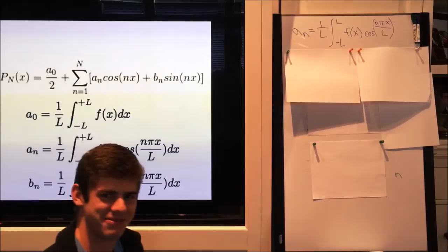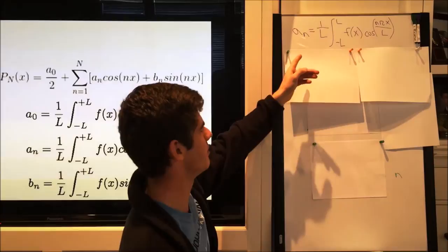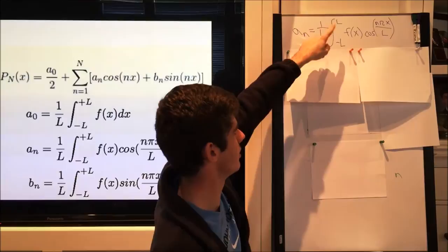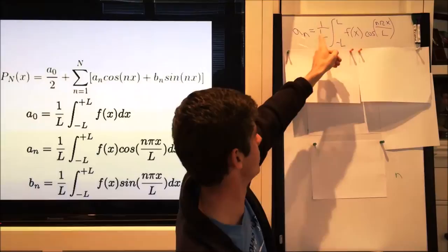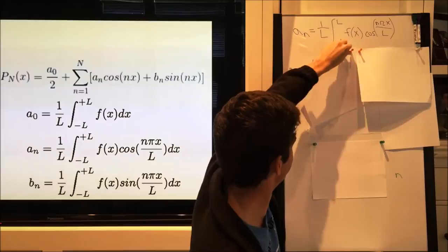Next we'll calculate a_n for all n's. As you can see here, a_n equals 1 over half of the period from negative L to L of the function times the cosine of n, the coefficient times π times x over L.